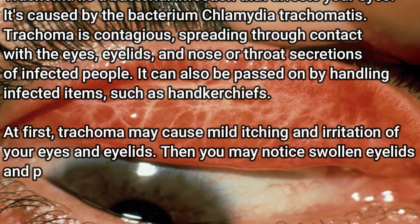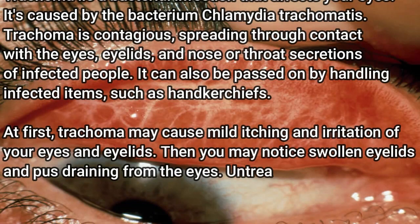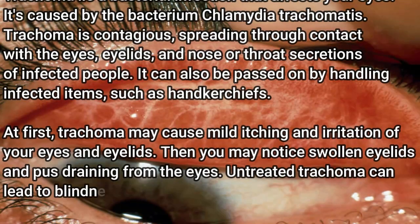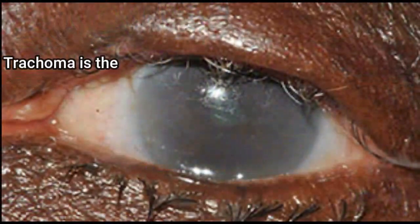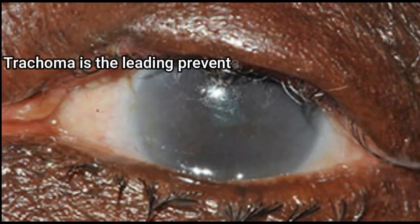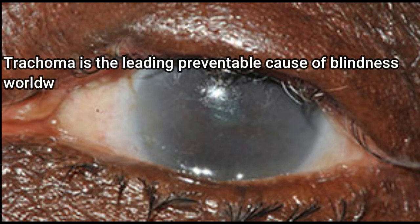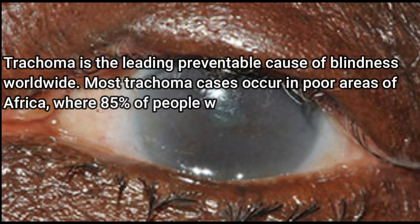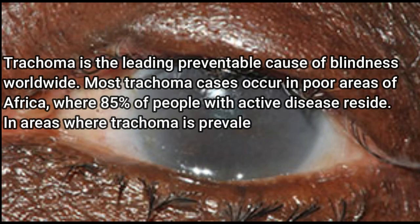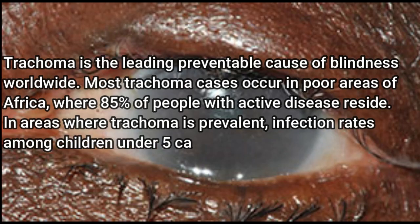At first, trachoma may cause mild itching and irritation of your eyes and eyelids. Then you may notice swollen eyelids and pus draining from the eyes. Untreated trachoma can lead to blindness. Trachoma is the leading preventable cause of blindness worldwide. Most trachoma cases occur in poor areas of Africa, where 85 percent of people with active disease reside.